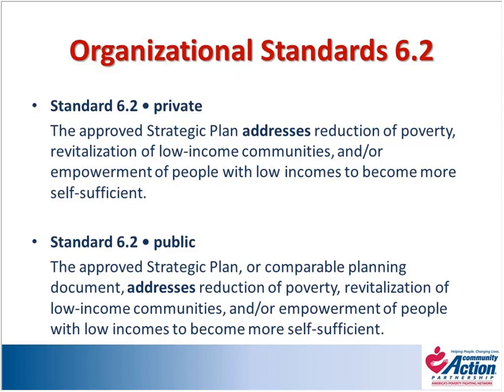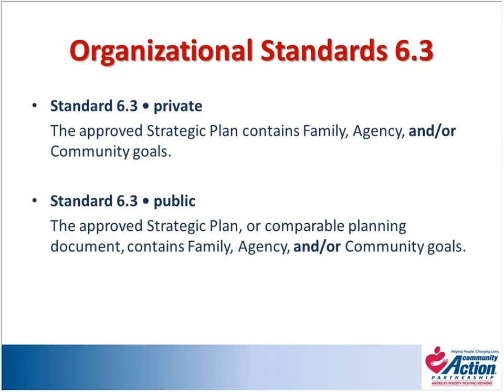Standard 6.3 asks that the approved strategic plan contains family, agency, and/or community goals. As Courtney touched on, this is part of the ROMA framework. What this is really asking is that in both your needs assessment and your strategic planning process, you're looking at the big picture — not only individuals and families but also the broader system of services, your own agency, other agencies, and their strengths and challenges in meeting community needs.